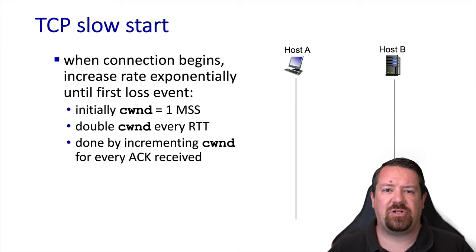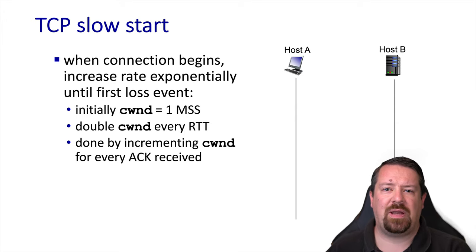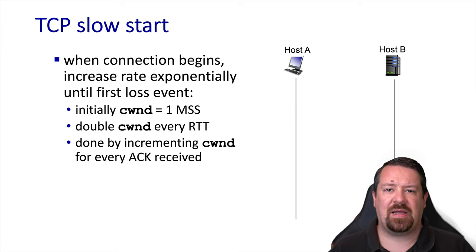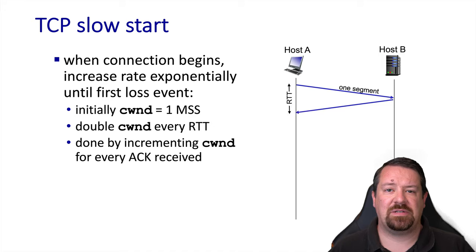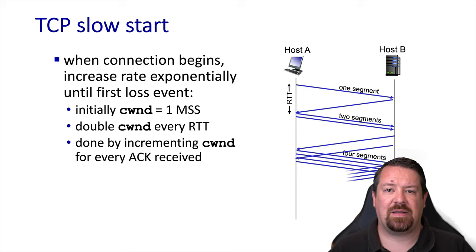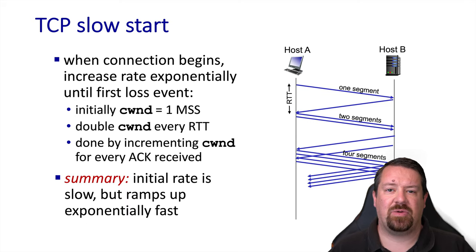The initial congestion window can be set to one MSS, but adding only one MSS every round trip time would ramp up very slowly. So instead, TCP slow start implements an exponential increase by doubling the congestion window every round trip time. In practice, the congestion window is incremented by one MSS for every acknowledgement received — sending one segment gets one ACK, then two packets get two ACKs, then four, then eight, and so on. Slow start is a bit of a misnomer because it ramps up much more quickly than AIMD would.